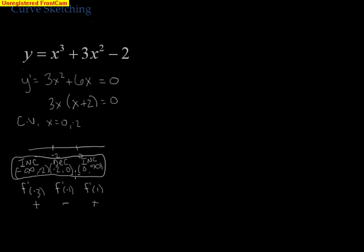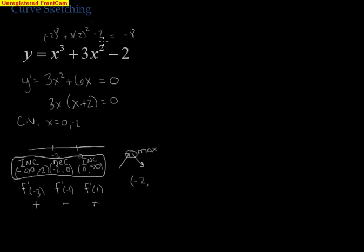By the first derivative test, at x equals negative 2 the function goes from increasing to decreasing, so we have a relative maximum. To get the y-value we plug negative 2 into the original function: negative 2 cubed plus 3 times negative 2 squared minus 2, which equals negative 8 plus 12 minus 2, giving us 2. So there's a max at negative 2 comma 2.